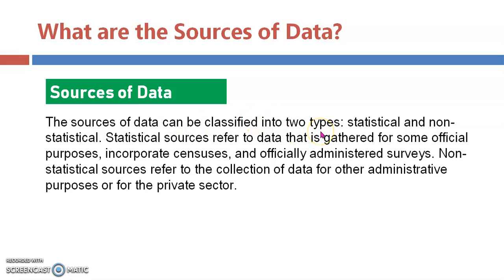What are the sources of data? The sources of data can be classified into two types: statistical and non-statistical. The statistical source refers to data gathered for some official purposes, incorporated in census and officially administered surveys. So we have two classifications — statistical and non-statistical. Statistical sources are when we are gathering official data for any official administered purpose.